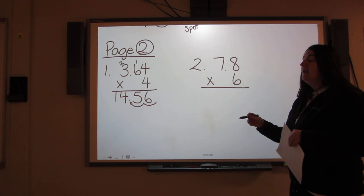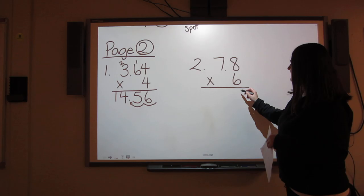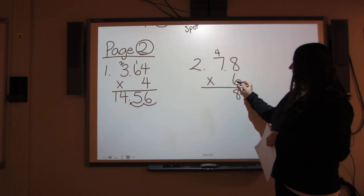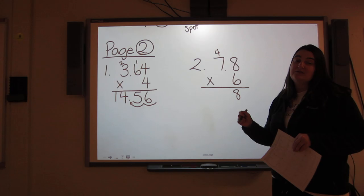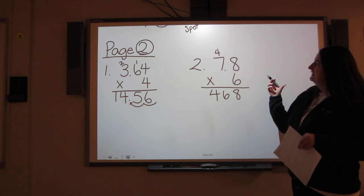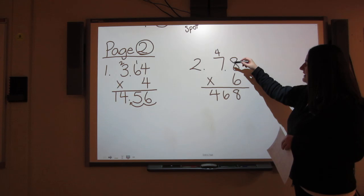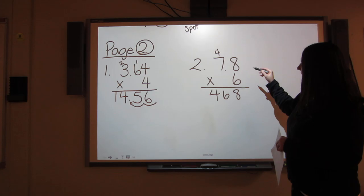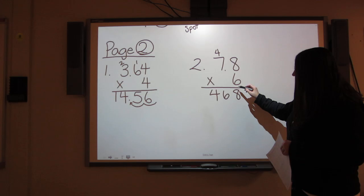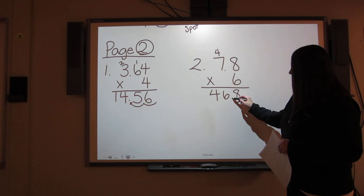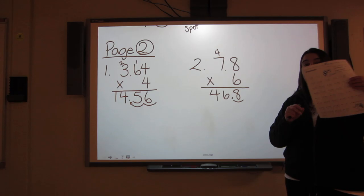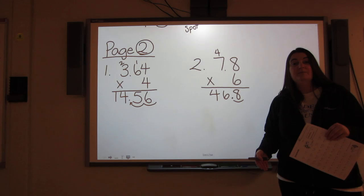Let's try number two. Number two is 7.8 times 6. Again, I focus on the calculations first. Six times eight is 48 and I carry the four. Six times seven is 42 plus the four I carry is 46. Then I look, now that I have completed my calculations, I look to see how many digits after the decimal I have in my question total. In this case, just the eight. That's one. So that means in my answer I'll have just the eight. One digit.